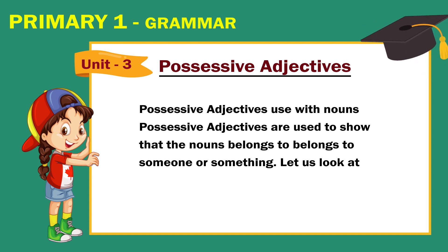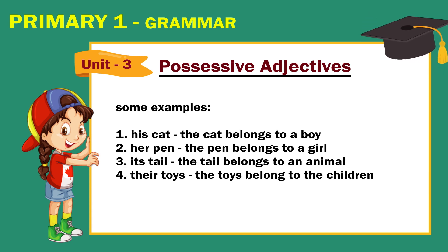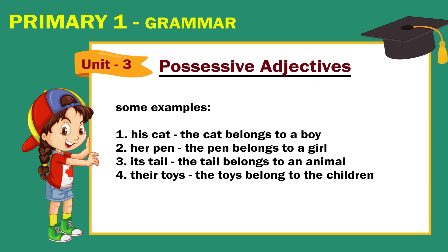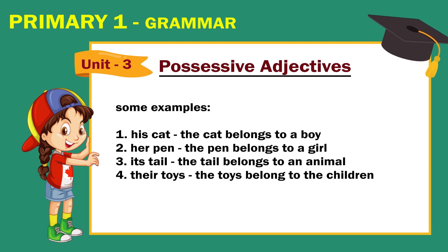Let us look at some examples. 1. His cat — the cat belongs to a boy. 2. Her pen — the pen belongs to a girl. 3. Its tail — the tail belongs to an animal. 4. Their toys — the toys belong to the children.